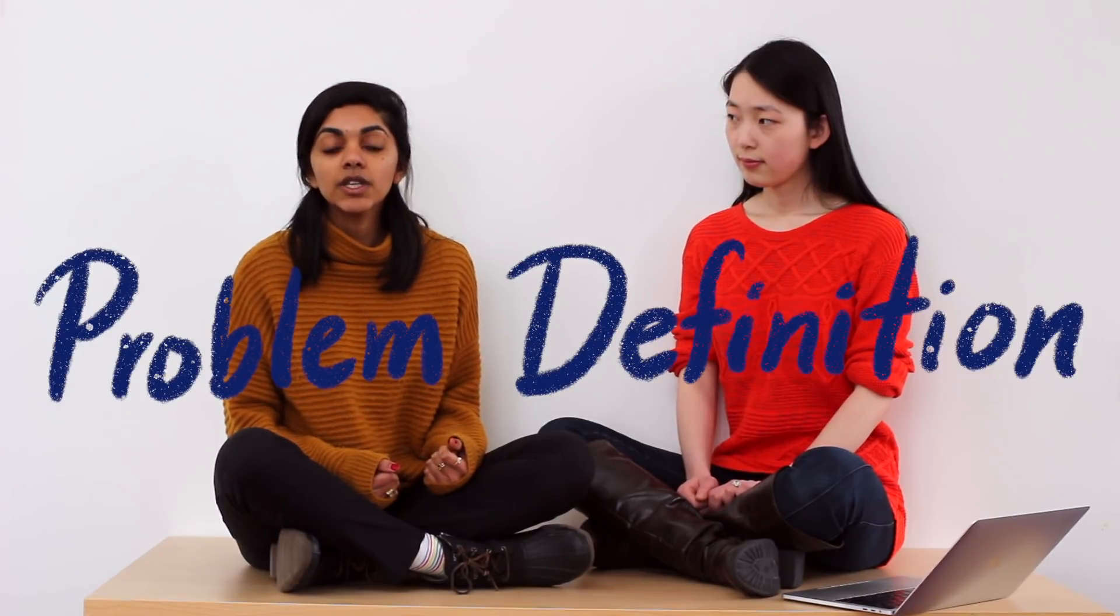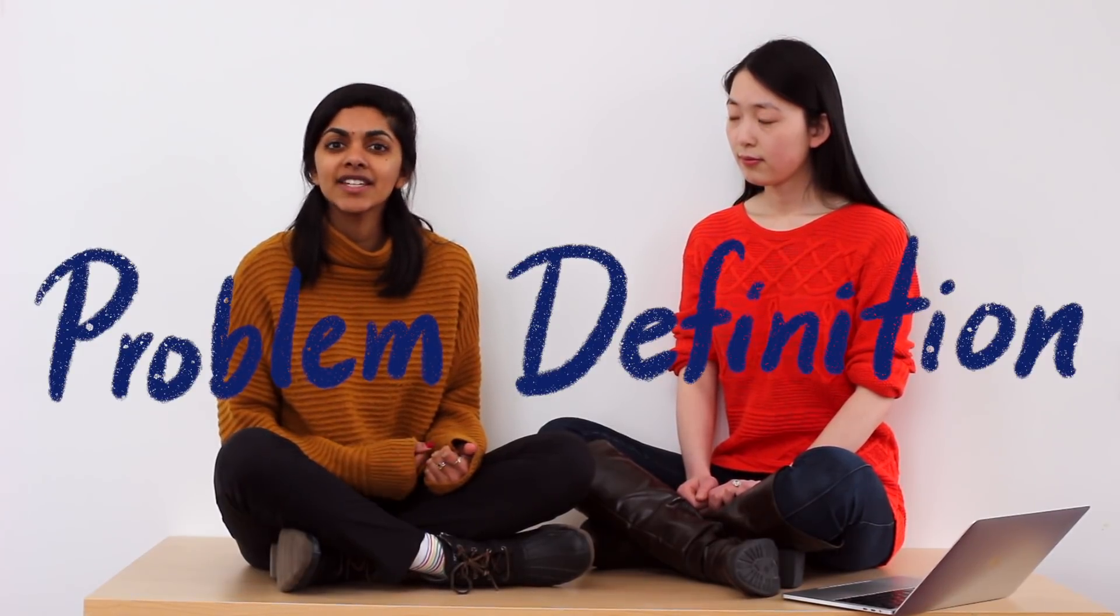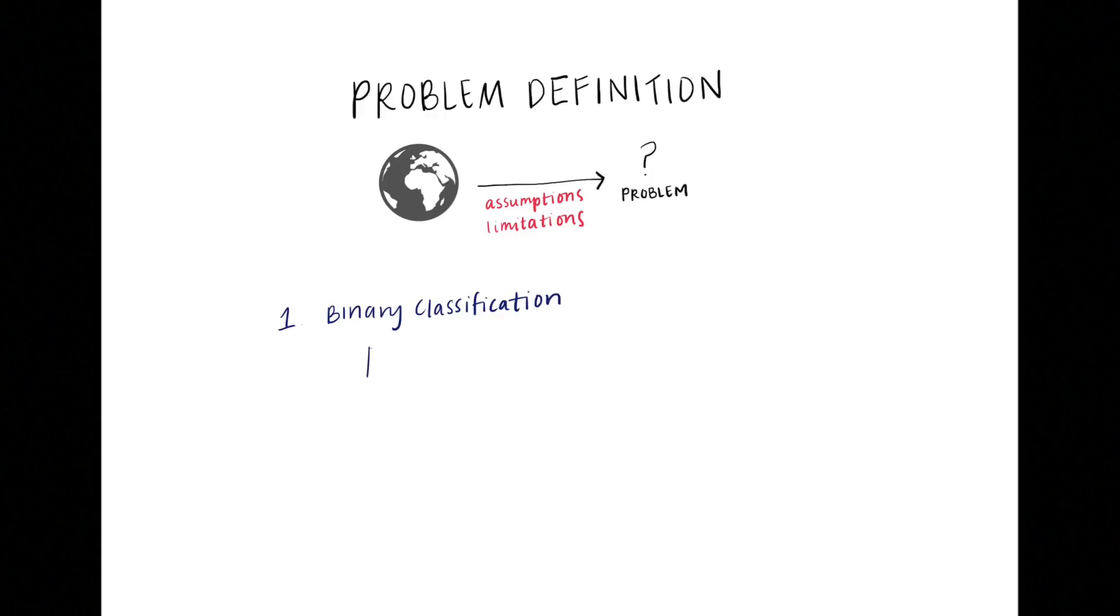The first thing that we need to do is problem definition. Often we assume that the problem comes predefined, but it's important to acknowledge the limitations and assumptions that we make with any problem definition. In our example we've defined our problem as a binary classification task where we take a picture of a person and output a classification of sad or not sad. When we do this we are assuming that people exhibit one dominant emotion and sacrificing performance on images where people are perhaps a mix of emotions.